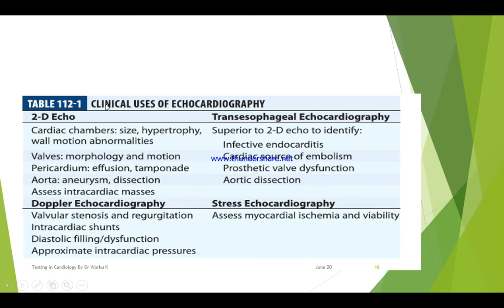This table shows the clinical uses of echocardiography. Two-dimensional echo is important for visualizing cardiac chamber size, whether there is hypertrophy or not, wall motion abnormalities, valve morphology and motion, the pericardium for effusion or tamponade, the aorta for aneurysm or dissection, and any intracardiac masses.